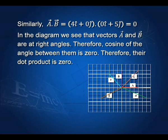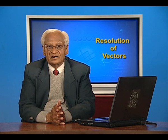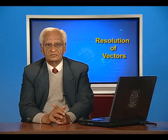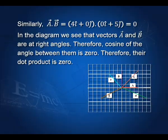Why is A dot B equal to zero in this case? In the diagram, vectors A and B are at right angles. When the vectors are at right angles, the angle between them is 90 degrees and cosine of 90 degrees equals zero. Therefore, A dot B equals zero.